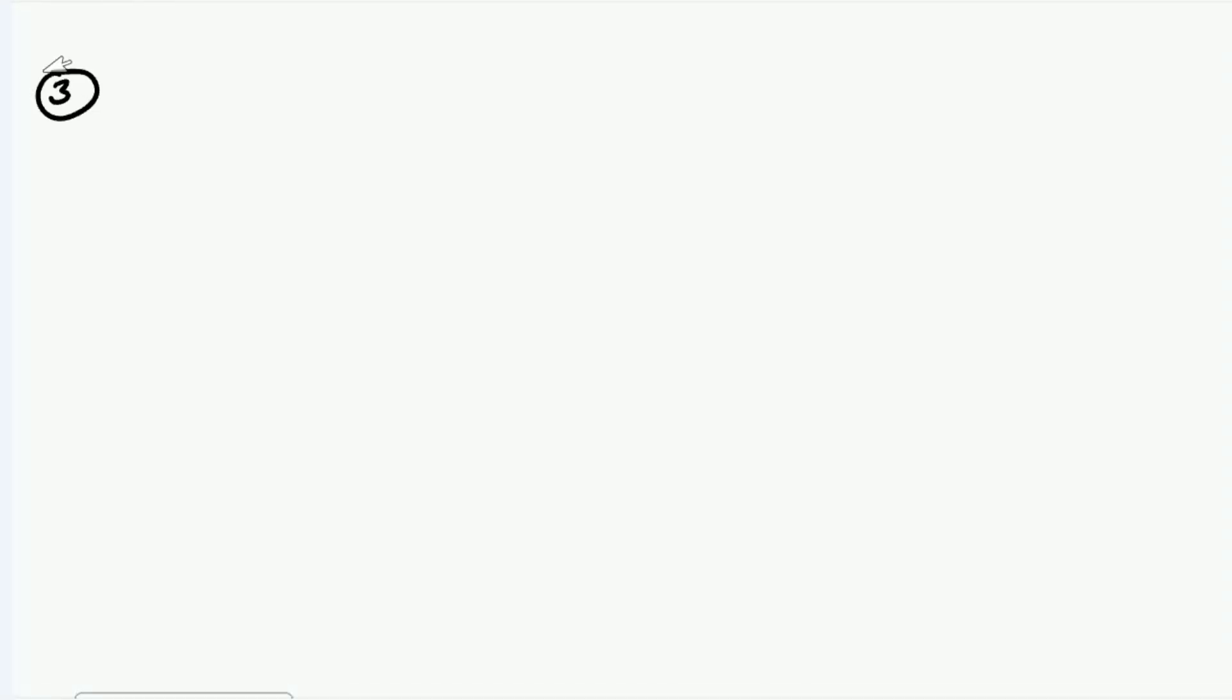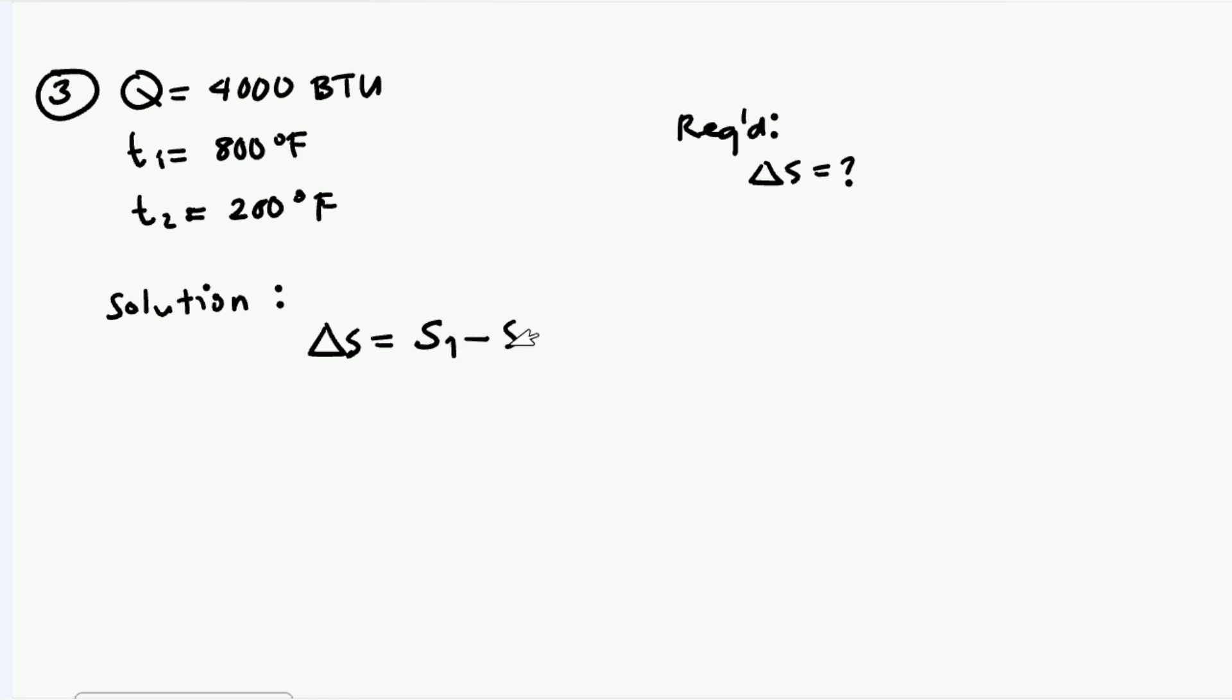Problem number three, we have given amount of heat of 4000 BTU. BTU means British Thermal Unit. So it's transferred from a reservoir with arbitrary temperature of 800 degree Fahrenheit to a reservoir at point two with 200 degree Fahrenheit. So the required is the change in entropy of the system. Solution for this: change in entropy is equals to the entropy at point one minus the entropy at point two.